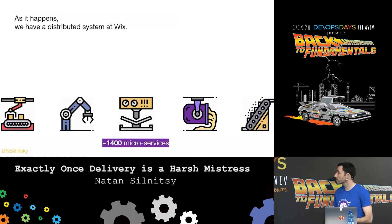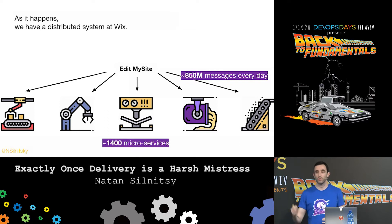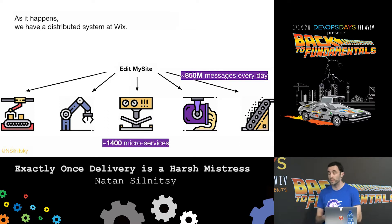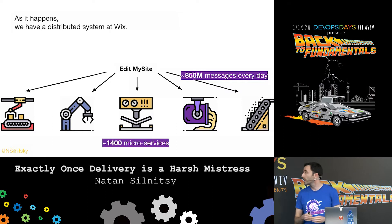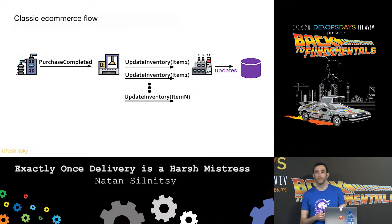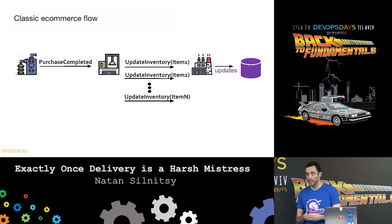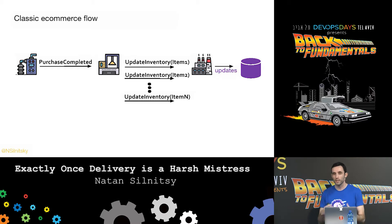At Wix we have a distributed system comprising roughly 1,400 microservices. A lot of the flows include the event-driven style - for instance, when you do site editing or publishing, as Wix is a website building platform - and we do it using Kafka. We have over 850 million messages every day.